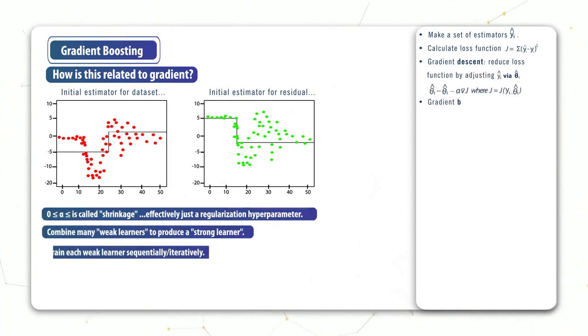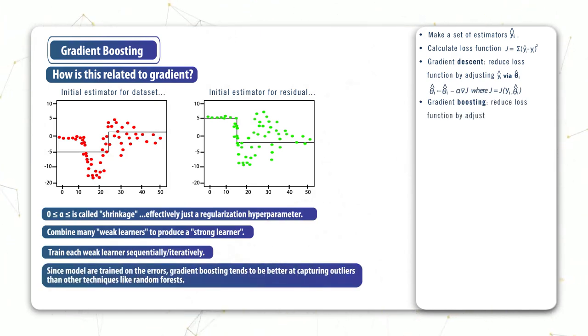But when the loss function is mean squared error, this gradient is just a residual. And yet it was the estimator of this residual or gradient that we were adding on to our original estimator in the previous example.